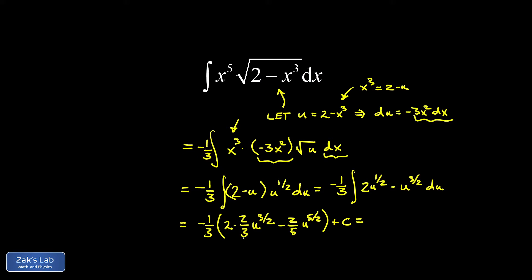Now we're not done until this is transformed entirely in terms of x. This was an x integral to begin with. If I look at my first term, that's going to be four thirds u to the three halves. If I distribute the negative one third to that, I get negative four ninths u to the three halves. But u is two minus x cubed, so two minus x cubed to the three halves. My second term is going to be positive.